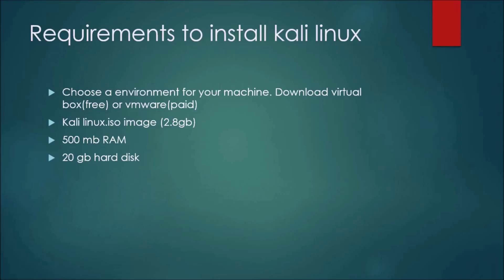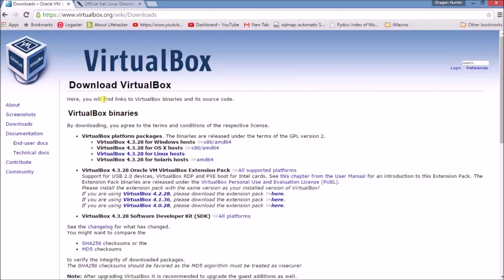To install Kali Linux in Windows 8.1, you require some things. You have to download VirtualBox or VMware — VMware is a paid version and VirtualBox is free. You also have to download the Kali Linux ISO image, and you need 500 MB RAM and 20 GB hard disk.